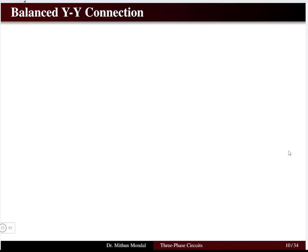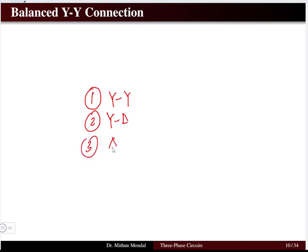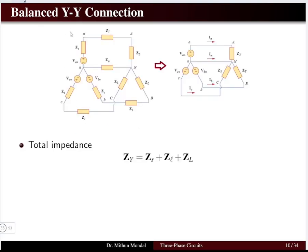Welcome to the next lecture in electric circuit analysis. We were discussing three-phase circuits. There are different types of circuits for three-phase connections: we can have star-star connection, star-delta connection, delta-star connection, and delta-delta connection. These are the four different types of connections possible in three-phase circuits, and we are going to discuss all four types in detail.